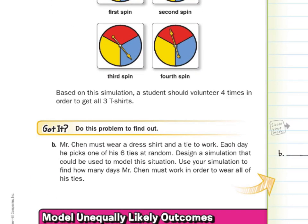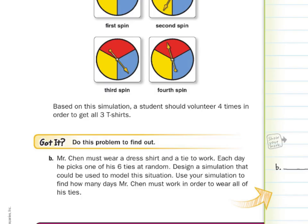Do we got it? Mr. Chen must wear a dress shirt and a tie to work. Each day, he picks one of his six ties at random. Design a simulation that could be used to model the situation. Use your simulation to find out how many days Mr. Chen must work in order to wear all of his ties.